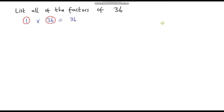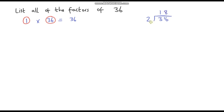So now let's move on to 2. Is 2 a factor of 36? Well any even number is always divisible by 2, so yes it is. So how many times does 2 go into 36? Well if we do our bus stop method of division: 2 goes into 3 one time with one remainder, and 2 goes into 16 eight times. So 2 times 18 is 36.